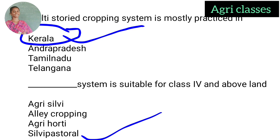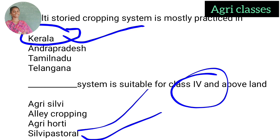Agri-silvi means agricultural crops plus silviculture (forest plantations). Alley cropping involves hedgerows. Agri-horti means agricultural crops plus horticulture (food plus fruit system). Silvi-pastoral means forest plus grasses. The correct answer is silvi-pastoral, which is suitable for class 4 and above land.